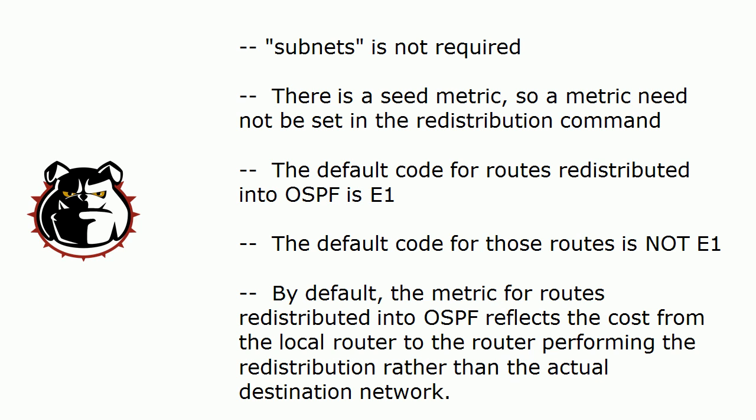Here are the five statements, true or false, about OSPF redistribution — meaning redistribution into OSPF. First, the use of subnets in the command is not required. Second, there is a seed metric, so a metric need not be set in the redistribution command — and if there is a seed metric, you need to tell me what it is. Third, the default code for routes redistributed into OSPF is E1. Fourth, the default code for those routes is not E1. And finally, by default the metric for routes redistributed into OSPF reflects the cost from the local router to the router performing the redistribution, rather than the actual destination network.